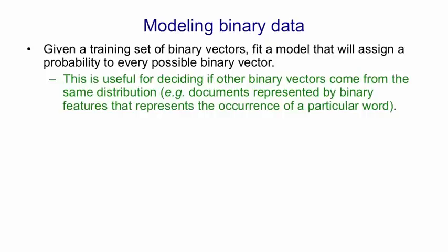And so you could use a set of hidden units to model the distribution for each document, and then you could assign a test document to the appropriate class by seeing which class of documents is most likely to have produced that binary vector.